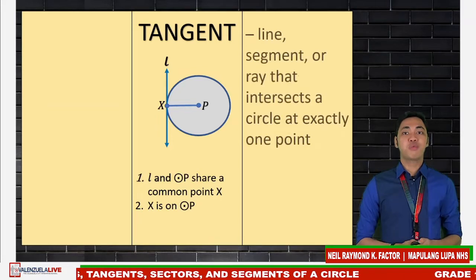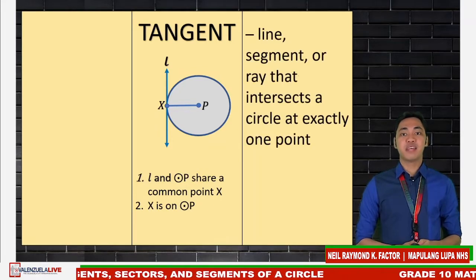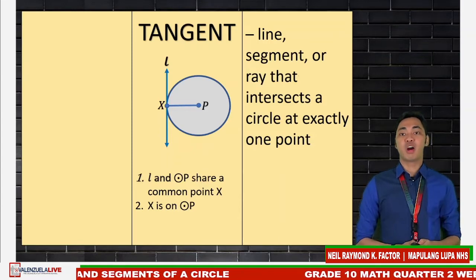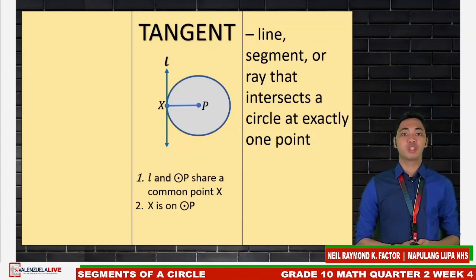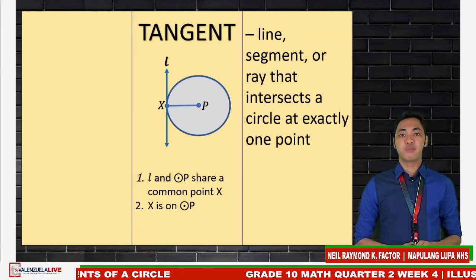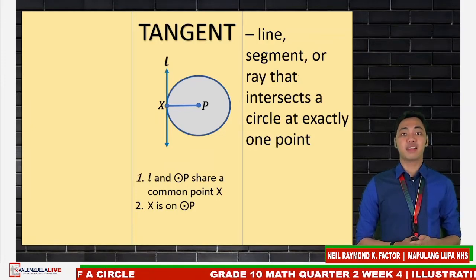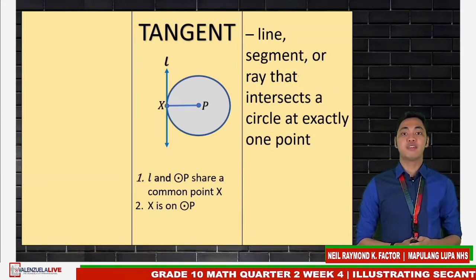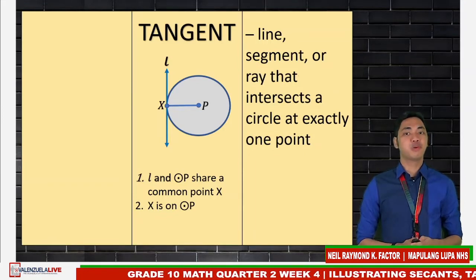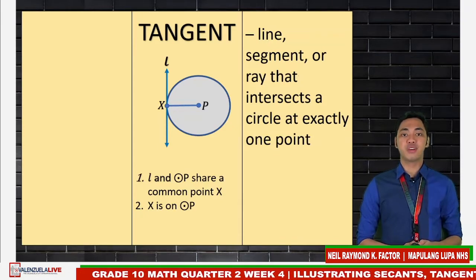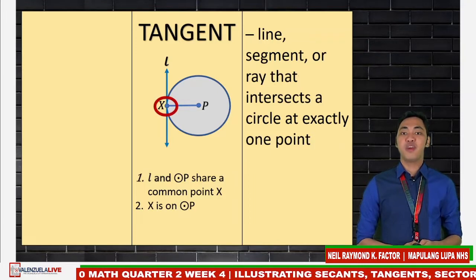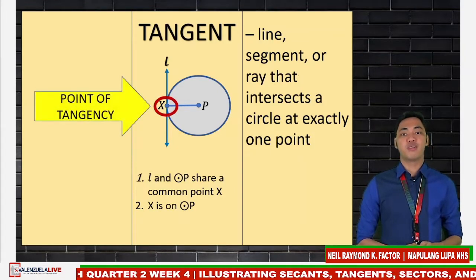Looking at the illustration and description for each case, which among the three would illustrate a tangent? You are right — that is case number two. As you can see in the figure, point X is on circle P. Formally, we define tangent as a line, a segment, or a ray that intersects a circle at exactly one point. Cases one and three would not fit this definition. That point — X in this figure — is called the point of tangency.